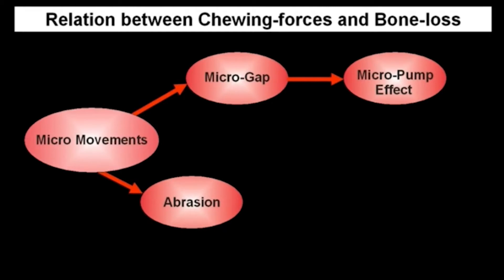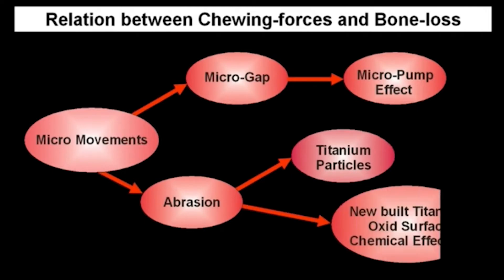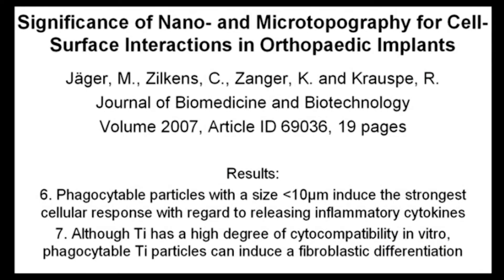One problem could be that we have titanium particles inside, and we destroy the titanium oxide surface. So the titanium oxide surface has to be rebuilt, and we have chemical effects inside near the bone. There is also interesting literature from orthopedic implantology showing that nano and micro particles which have a size smaller than 10 microns activate our osteoclasts.